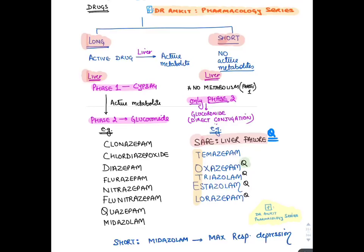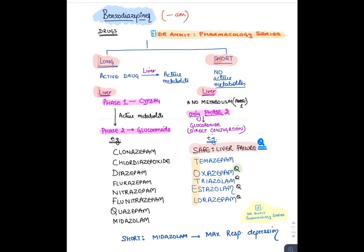The short-acting benzodiazepines safe in liver failure — remembered by the mnemonic TOTAL — are: temazepam, oxazepam, triazolam, estazolam, and lorazepam. All other benzodiazepines are long-acting, undergo phase 1 metabolism, and form active metabolites.